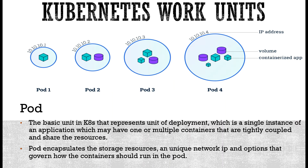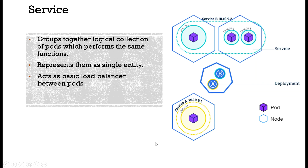Now let's look at Kubernetes work units. The first is the pod — the very basic unit in Kubernetes representing the unit of deployment, which is a single instance of an application that may have one or multiple tightly coupled containers sharing resources. The pod encapsulates storage resources, a unique network IP, and options governing how containers should run. Services are another important component — they group together a logical collection of pods performing the same functions, representing them as a single entity and acting as a basic load balancer between pods.